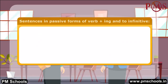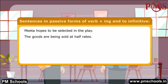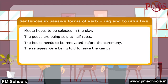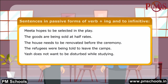Here are a few more sentences in passive forms of verb plus -ing and to infinitive: Meeta hopes to be selected in the play. The goods are being sold at half rates. The house needs to be renovated before the ceremony. The refugees were being told to leave the camps. Yash does not want to be disturbed while studying. The students are being taught by the new lecturer.